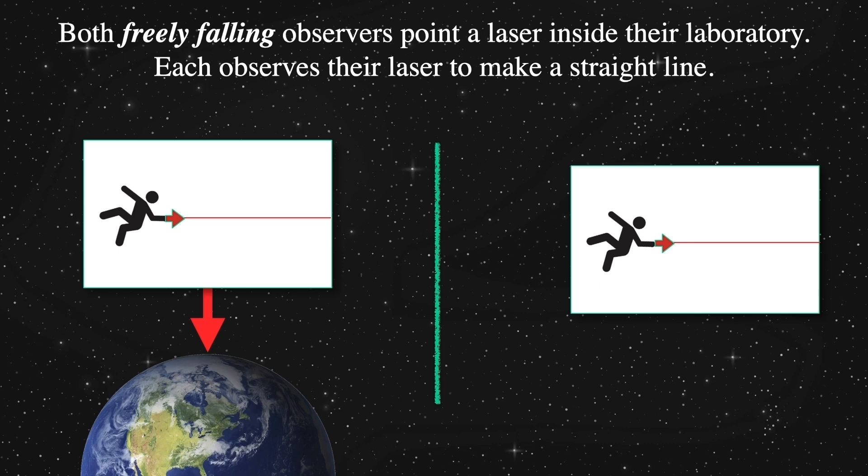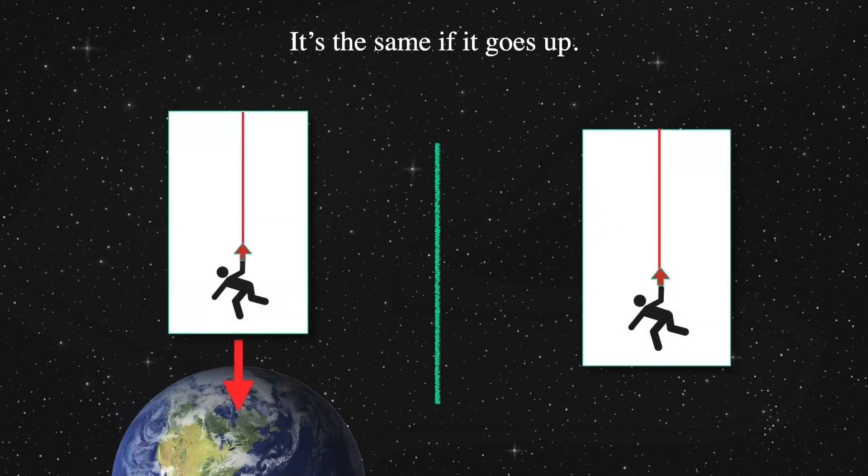On the right, deep in space, far away from any gravitational source, he shoots the laser across and it hits the far wall straight. The same will happen if you're freely falling in the Earth's gravitational field. This works for any orientation due to the local positional invariance.